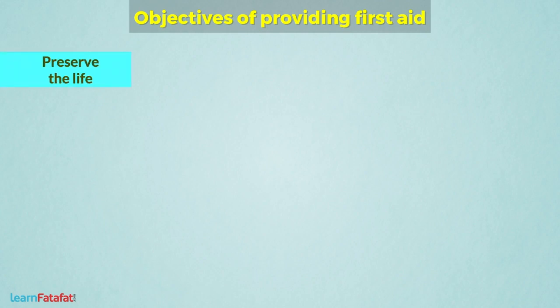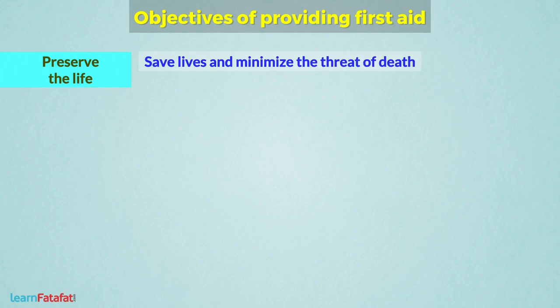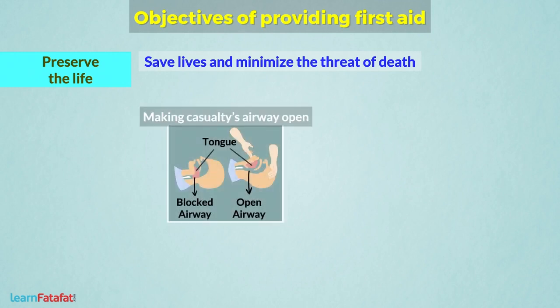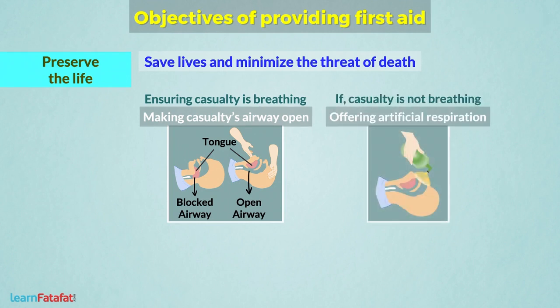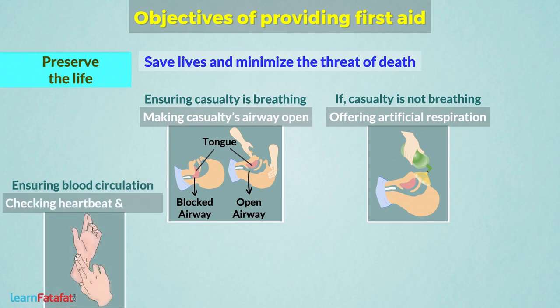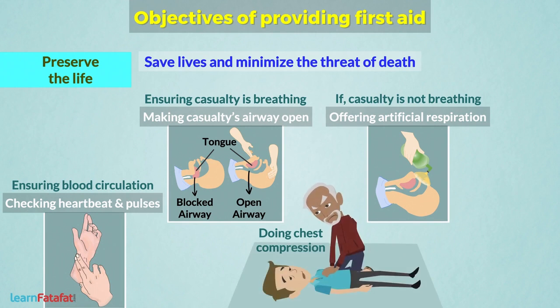The first P is Preserve Life. The very first aim of First Aid is to save lives and minimize the threat of death. This includes making the casualty's airway open, ensuring the casualty is breathing — if not, offering artificial respiration — and ensuring blood circulation by checking heartbeats and pulses. If not present, doing chest compression in the proper way.